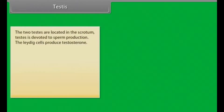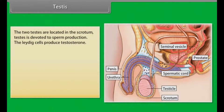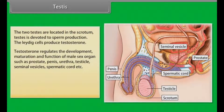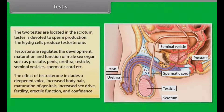The two testes are located in the scrotum and are devoted to sperm production. The Leydig cells produce testosterone. Testosterone regulates the development, maturation and function of male sex organs such as the prostate, penis, urethra, testicles, seminal vesicles, and spermatic cord. The effects of testosterone include a deepened voice, increased body hair, maturation of genitals, increased sex drive, fertility, erectile function, and confidence.